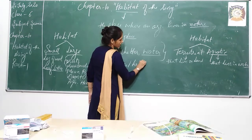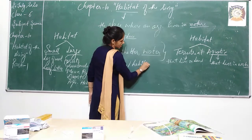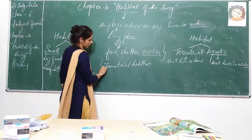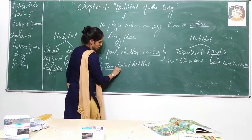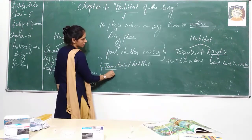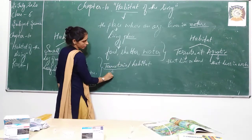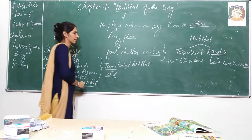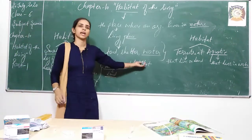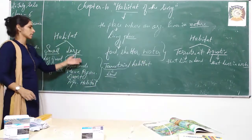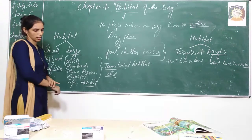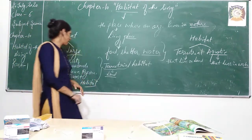This word terrestrial has actually been derived from the word 'terra', which means land. So the habitat on land is called terrestrial habitat. These are the biggest categories: terrestrial and aquatic habitat.